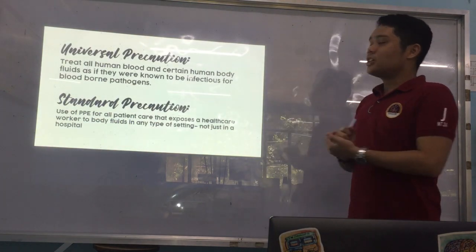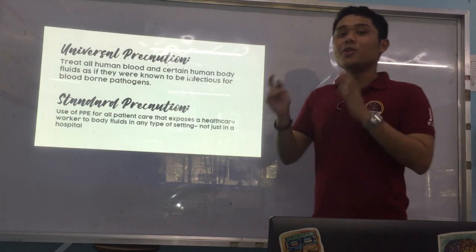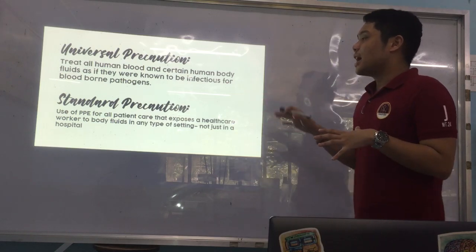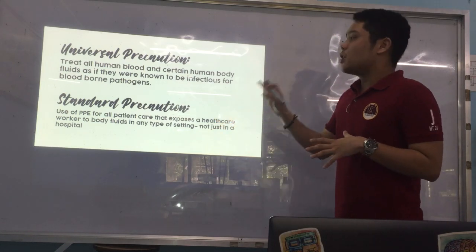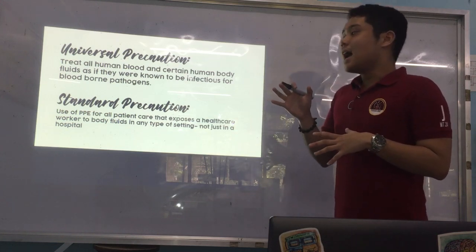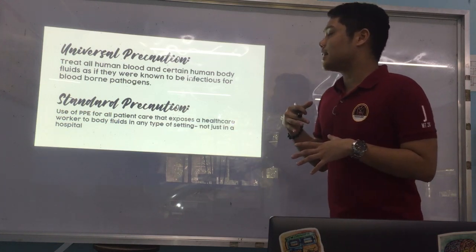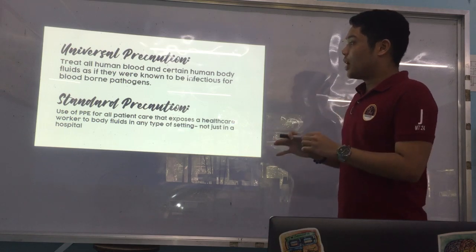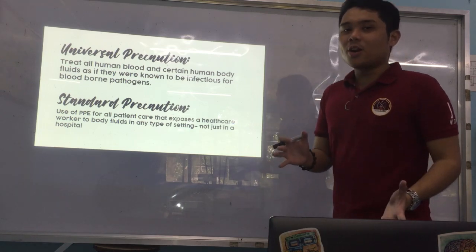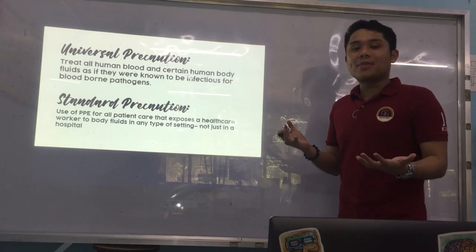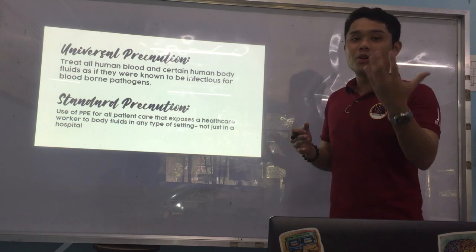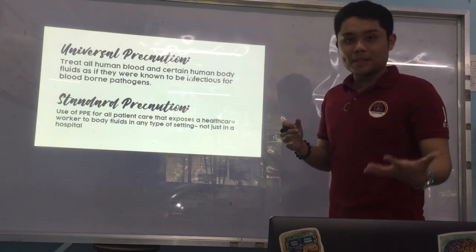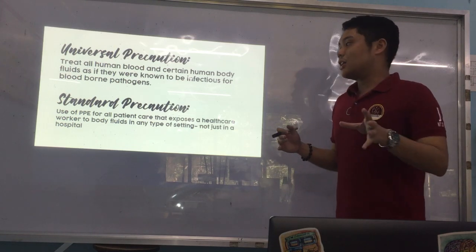Our first part is to differentiate between universal precautions and standard precautions. According to universal precautions, we should treat all human blood and certain human body fluids as if they were known to be infectious for blood-borne pathogens. Examples of blood-borne pathogens include HIV, hepatitis B virus, hepatitis C virus, and others.